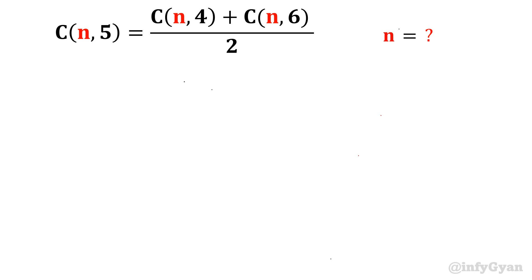Hello everyone, welcome to Infigyan. In this video we are going to solve and understand one factorial and permutation combination based problem, that is C(n,5) equal to C(n,4) plus C(n,6) over 2. This is one of the CAT preparation questions.